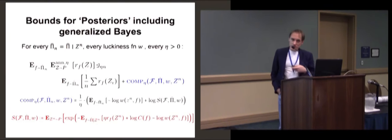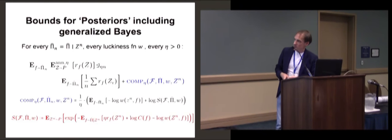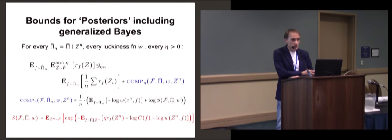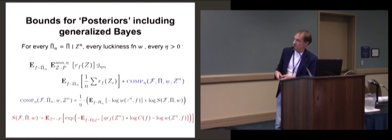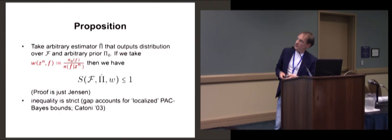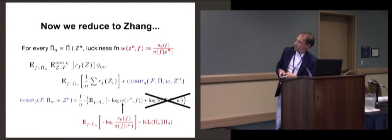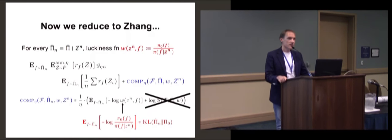Now we go to full generality — general random estimators which output a distribution. In order for the bounds to hold, we have to generalize S further. If we have a prior and define the luckiness function to be prior divided by posterior given the data, then we can show that S — the data-independent part of the complexity — is always bounded by one. The proof is just Jensen's inequality. So then the luckiness function of this form makes S vanish, and we have expectation of minus log prior divided by posterior, which is the KL divergence. So we get Zang's bound back.